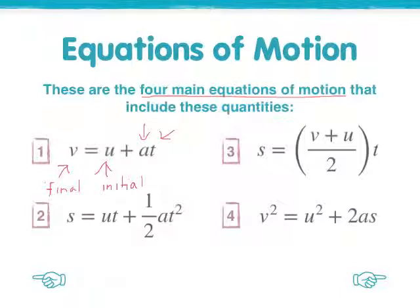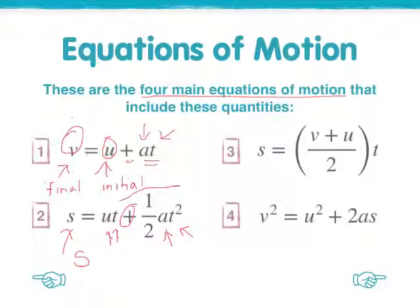So the first equation is final velocity equals initial velocity plus acceleration times time. Our second equation, s, refers to displacement. So the displacement equals the initial velocity times time plus a half times the acceleration times time squared. You have seen this before in our acceleration experiments.